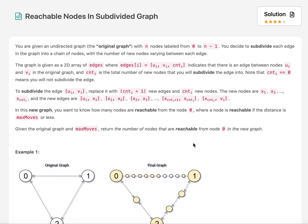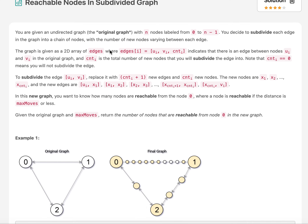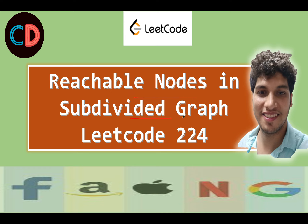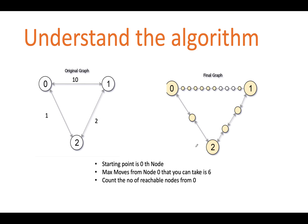Hello everyone, welcome to day 12th of September LeetCode challenge. Today's question is Reachable Nodes in Subdivided Graph. I'll be explaining the question as well as the solution in the presentation. So without much ado, let's move on to the PPT. Reachable Nodes in Subdivided Graph, LeetCode 882 — it's a hard problem on LeetCode. However, the concept is not a new concept for us; we have solved plenty of questions on the same logic.